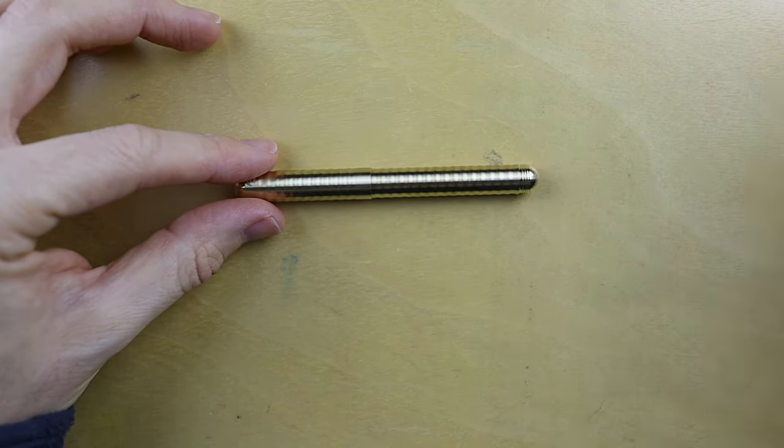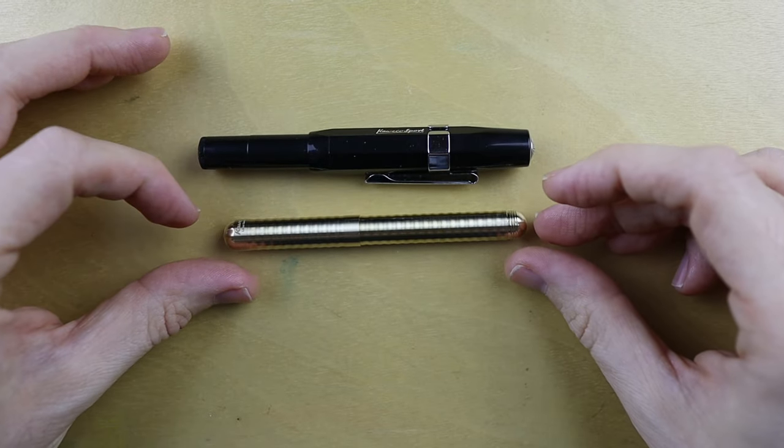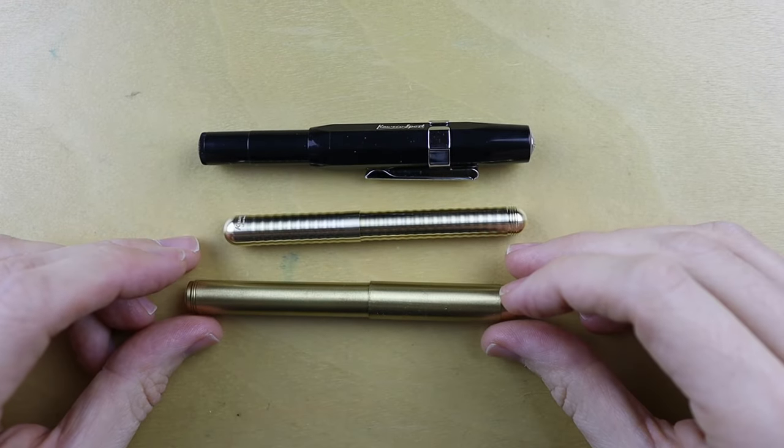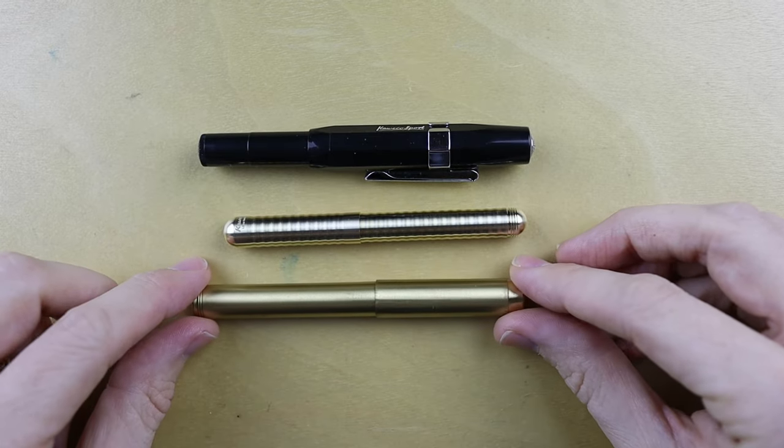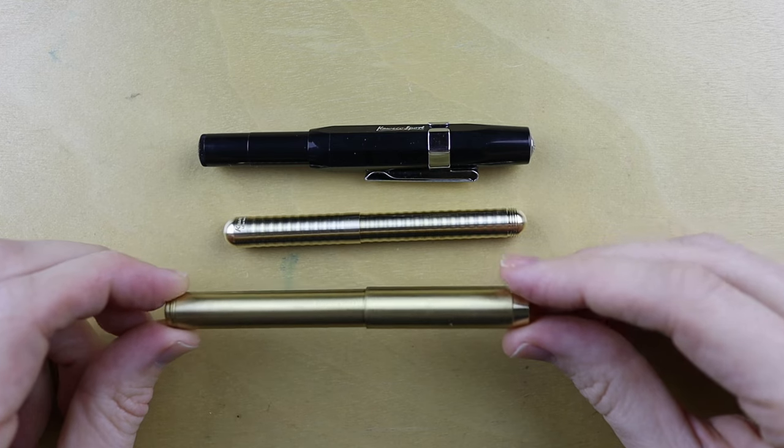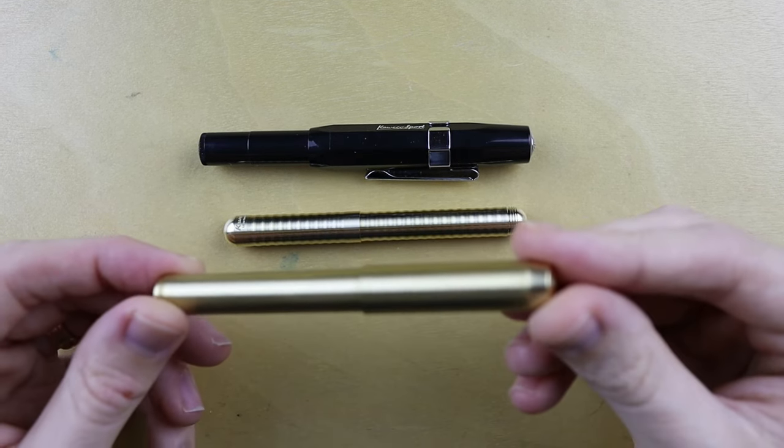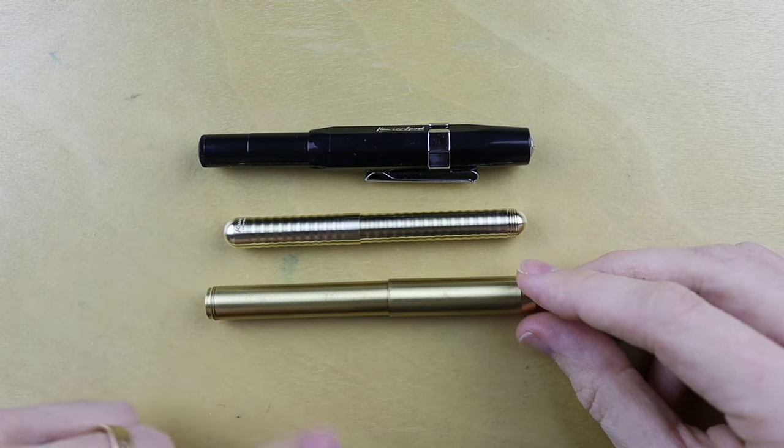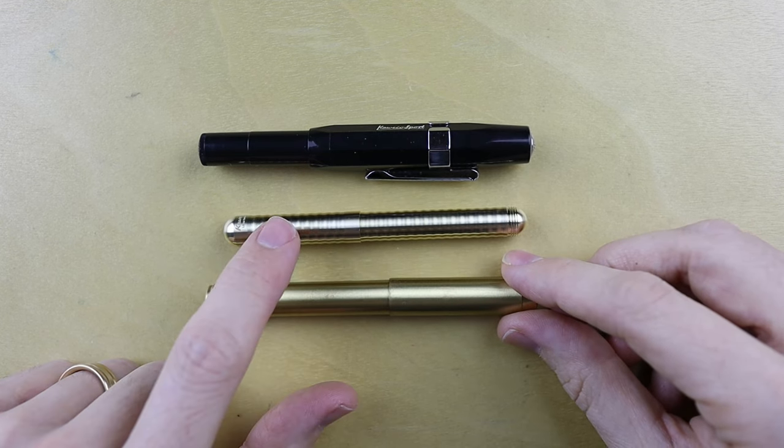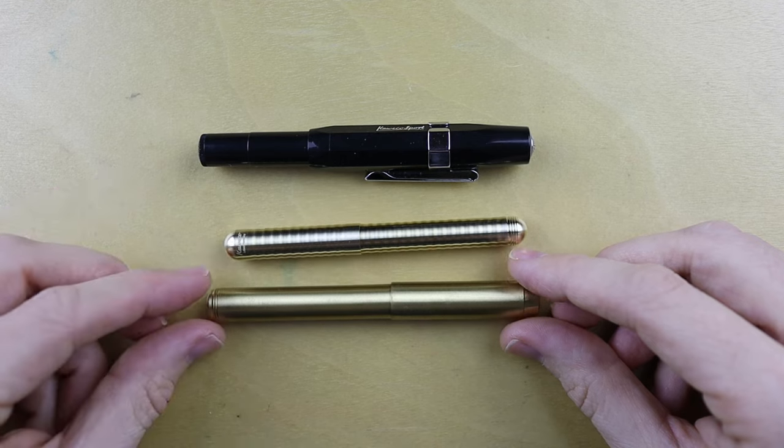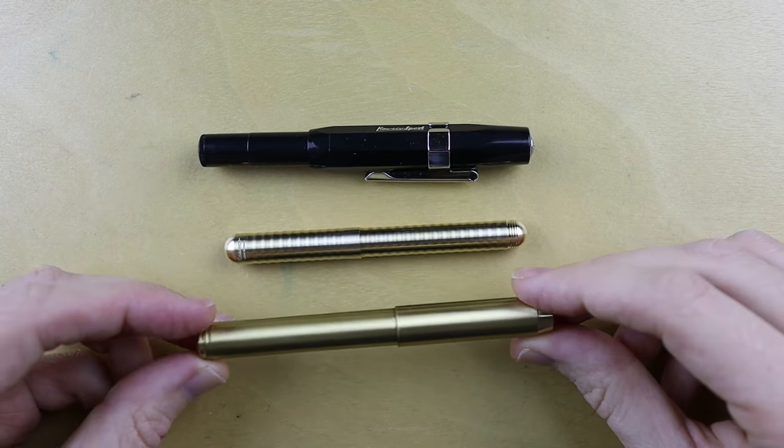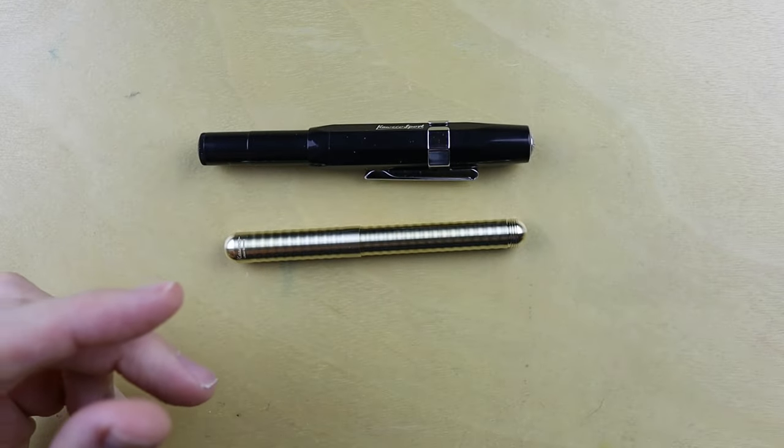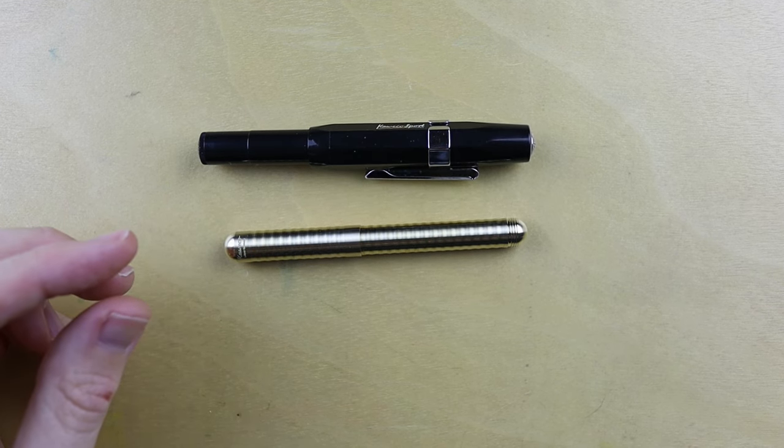I don't know how I feel about that. So just for reference, this is the Kaweco Sport. And then here's the other brass pen that I have reviewed on this channel that I really like. This is the Delike slash Moonman slash Majohn pen. I really do like this pen. And I thought it would be more along the lines of this. Seeing the size difference, the diameter difference, I guess it's its own thing.